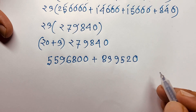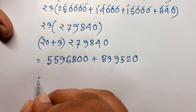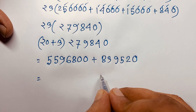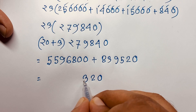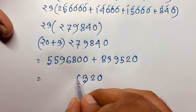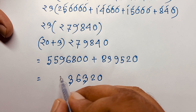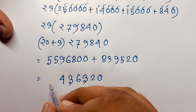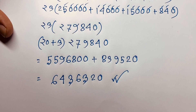Now adding both values together: the digits come out to 0, then 2, then 3, then 6, then 3, then 4, and 5 plus 1 equals 6. So this is our final answer.